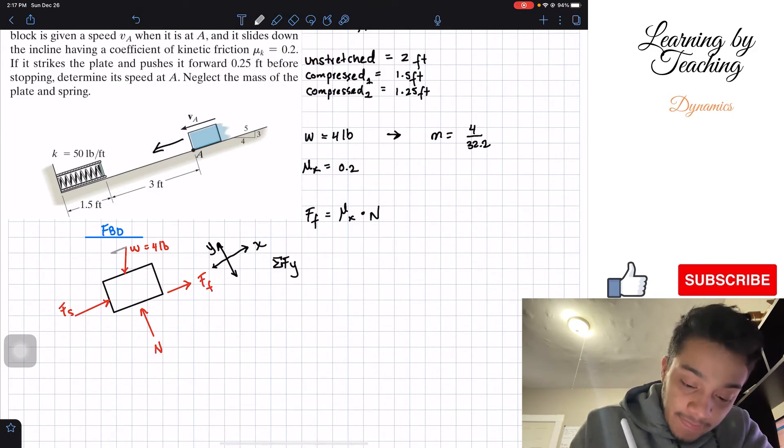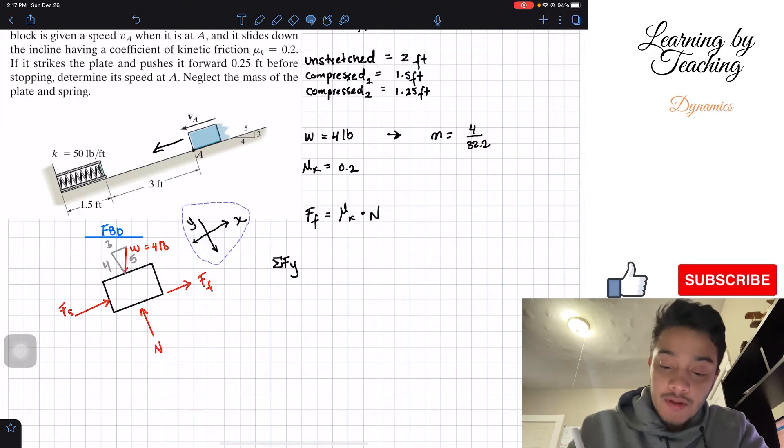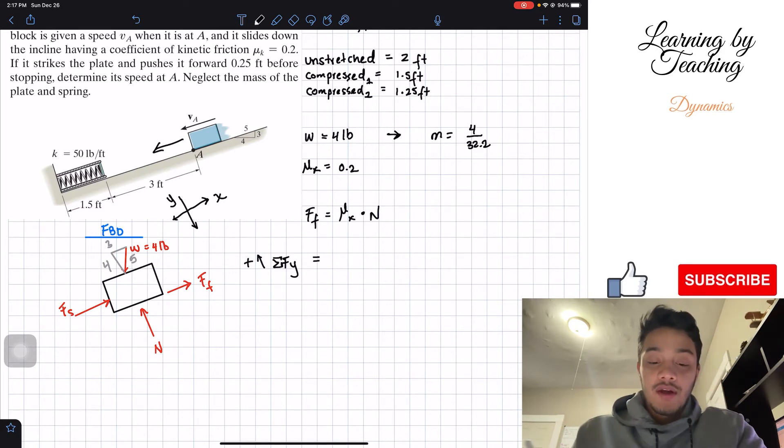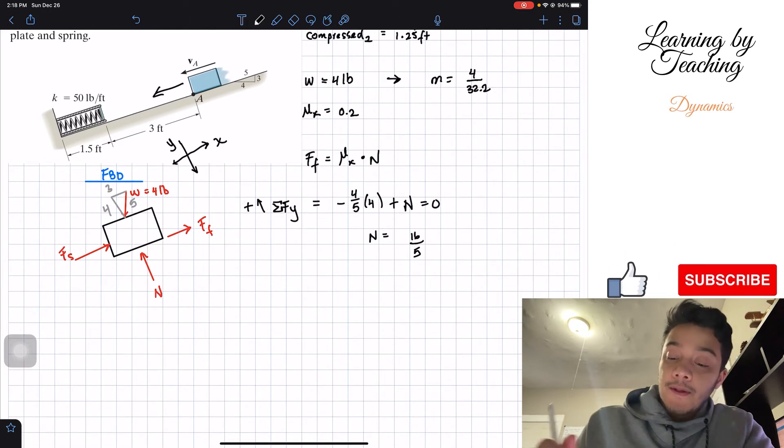So by geometry, the weight can also be given as a 3, 4, 5 triangle. So we will have my 3, 4, 5 triangle in here. And now that we know this is our axis, we're going to assume that going up is positive. So what do we have? We have negative 4 over 5 of my W, meaning of 4 pounds, and then we have positive my normal force. And all this should be equal to 0. Why is this equal to 0? Because we're not moving in this y direction. So if we solve for my normal, this is just basically 16 over 5.